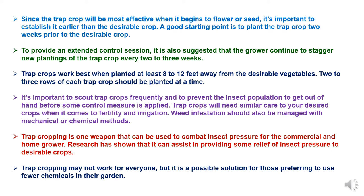Trap crops work best when planted at least eight to twelve feet away from the desirable vegetables or crops. Two to three rows of each trap crop should be planted at a time. It is important to scout trap crops frequently and prevent insect populations from getting out of hand before a control measure is applied. Trap crops will need similar care to your desired crops regarding fertility and irrigation. Weed infestation should also be managed with mechanical or chemical methods.